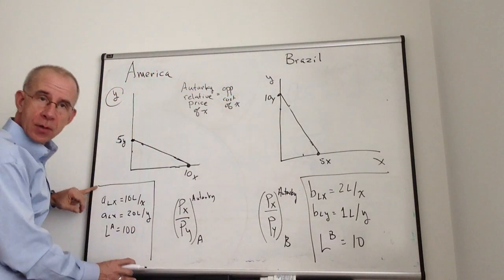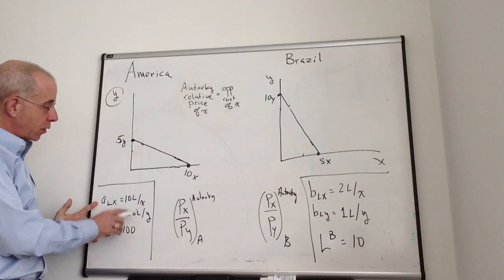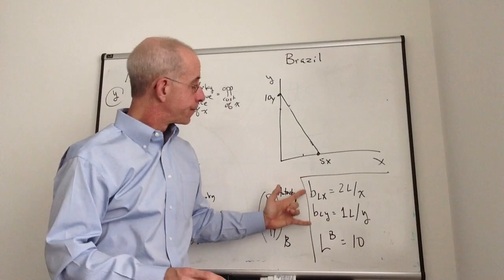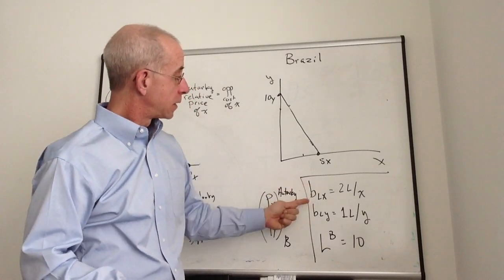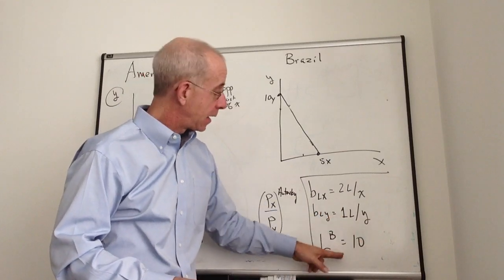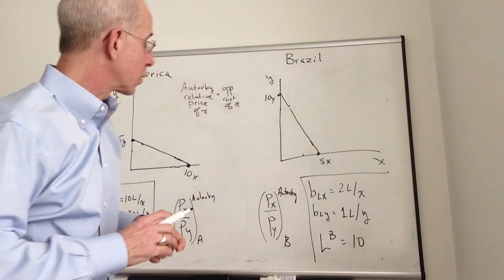We have these unit labor coefficients for America: 10 workers per X, 20 workers per Y. For Brazil, it's 2 workers for every X, 1 worker for every Y, 10 total workers.